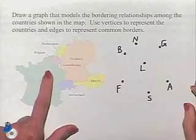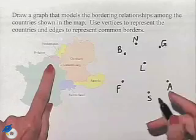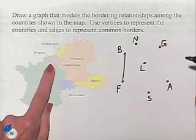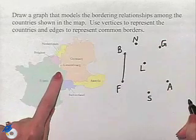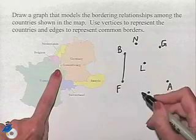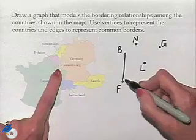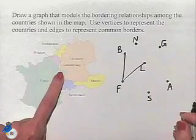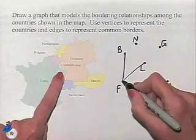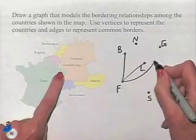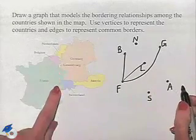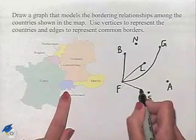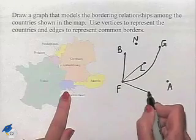Let's begin with France. France borders Belgium, so we'll draw an edge between vertices F and B. France shares a border with Luxembourg, so we're going to connect with an edge. France shares a border with Germany, so we'll draw in another edge. France also shares a border with Switzerland, and so we have an edge going to S.